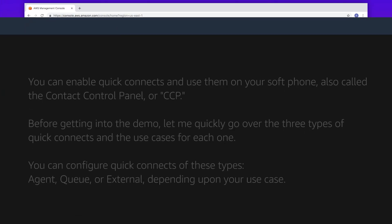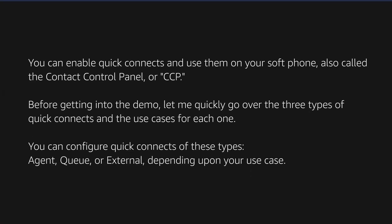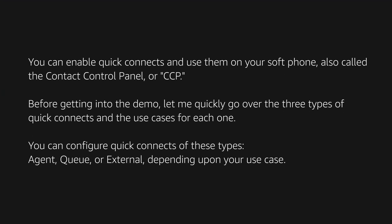You can enable quick connects and use them on your soft phone, also called the contact control panel or CCP. Before getting into the demo, let me quickly go over three types of quick connects and the use cases for each one. You can configure quick connects of these types: agent, queue, or external, depending upon your use case.